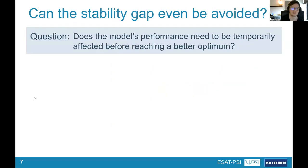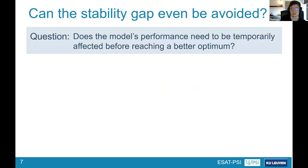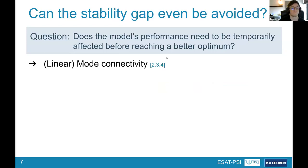The second question is: can the stability gap be avoided at all? Perhaps your model is near an optimum for the first task, but that optimum is far from optimal with respect to all tasks, and you need to escape it through a transient phase of forgetting. However, there is evidence from mode connectivity research — especially linear mode connectivity — that casts some doubt on this.